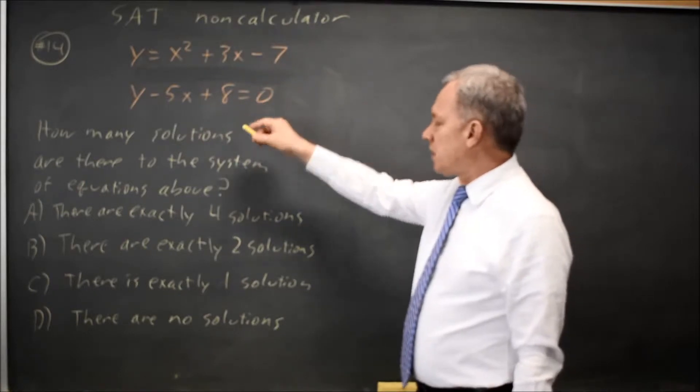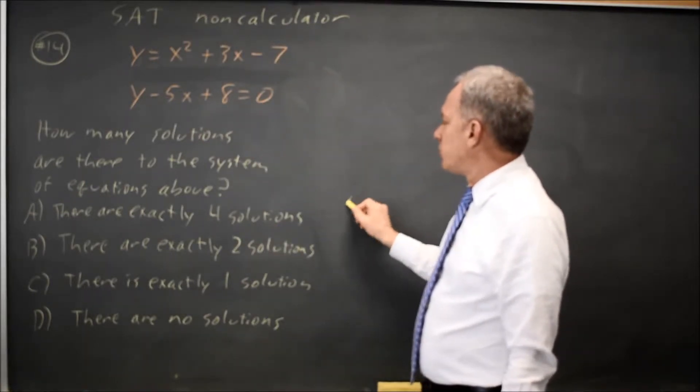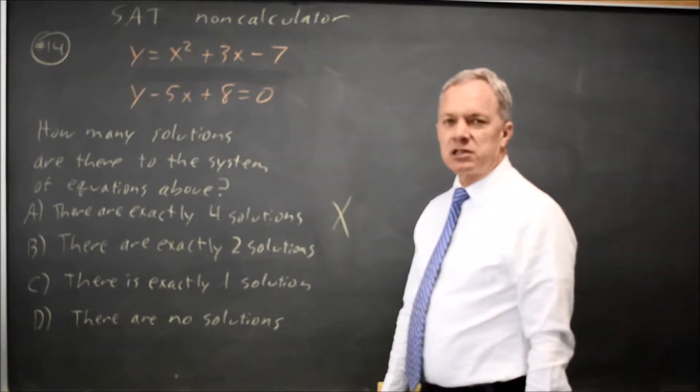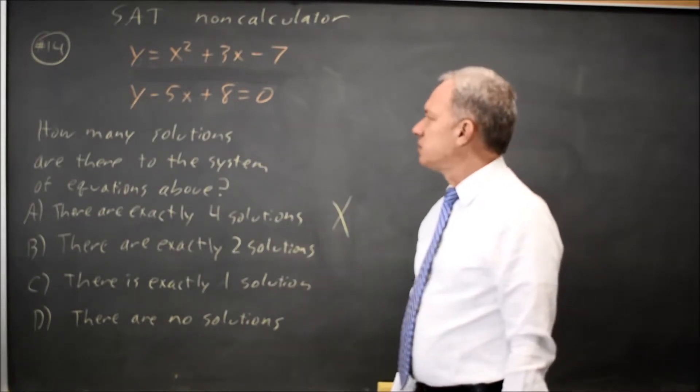If you have a parabola and a line, they cannot intersect in four solutions. You can have two, one, or zero solutions.